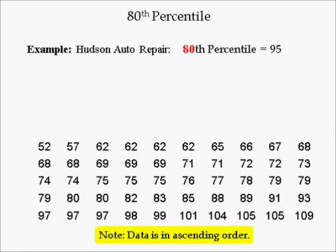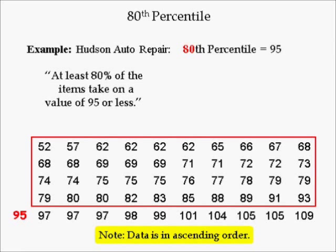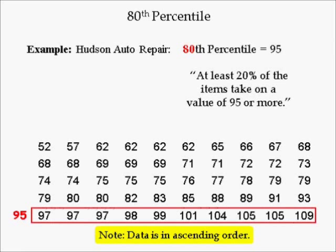Notice that the 80th percentile of $95 is not in the data set. According to the first part of the percentile definition, at least 80% of the items take on the value of 95 or less. There are 40 values in the data, all less than 95, and 40 divided by 50 equals 0.8 or 80%. According to the second part, at least 100 − 80 = 20% of the items take on a value of 95 or more. There are 10 values greater than 95, and 10 divided by 50 equals 0.2 or 20%.